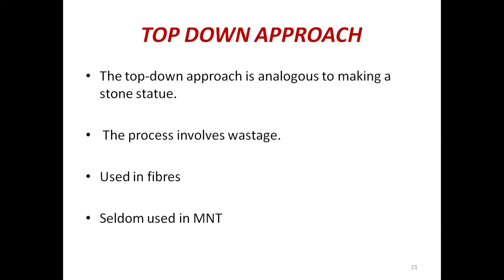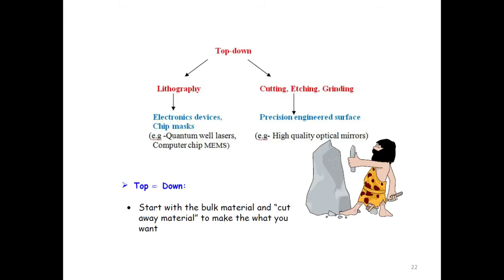The top-down approach is analogous to making a stone statue. The process involves various wastages and is used in fibers, and rarely in the manufacturing of nanotubes. Top-down approaches are classified into two ways: lithography, cutting, etching, and grinding. Lithography is mainly used in fabricating electronic devices or chip masking, while cutting, etching, and grinding are used in precision engineered surfaces.